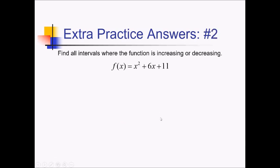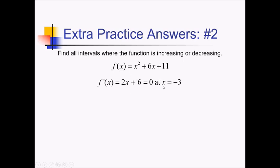On this problem, they want us to find intervals where this parabola is increasing and decreasing. This can be done without calculus, but here's the calculus approach: find the derivative, set it equal to 0, and do sign analysis. My derivative is going to be 2x plus 6, just using the power rule. Setting that equal to 0 and solving — subtract 6 and divide by 2 — that's going to be negative 3.